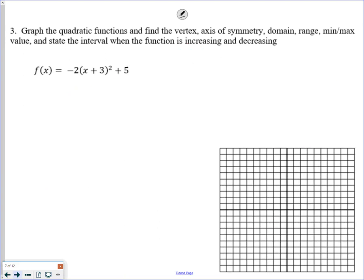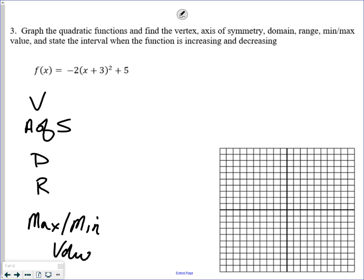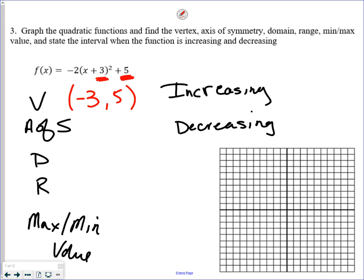Now we're going to do the exact same thing in vertex form. So we still have vertex, axis of symmetry, domain, range, max or min, maximum or minimum value. We still have increasing, maybe I'll write this one out, decreasing. Again, everything starts with the vertex. This one's actually in vertex form. Negative 3, comma 5. Notice that the x value of the vertex and the y value of the vertex, that makes the axis of symmetry x equals negative 3. And I'm going to graph from there.